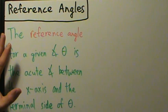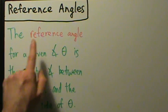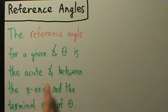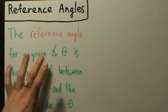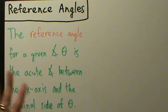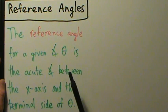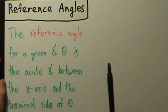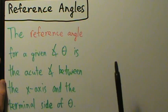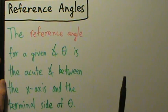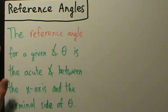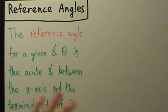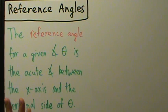We'll talk about what a reference angle is, how to find it, and we'll do a bunch of examples. The reference angle for a given angle theta is the acute angle between the x-axis and the terminal side of theta. We're only talking about angles in standard position, and we only care about non-quadrantal angles — that is, angles that lie in a quadrant, not on an axis.